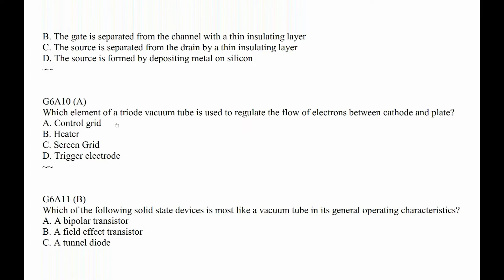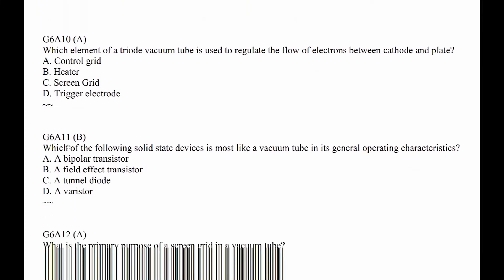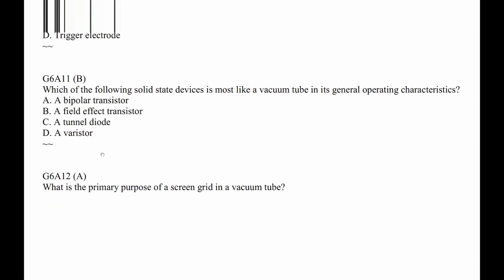G6A10. Which element of a triode vacuum tube is used to regulate the flow of electrons between the cathode and the plate? There's only one thing left, and that's the grid — the control grid. G6A11. Which of the following solid state devices is most like a vacuum tube in its operating characteristics? That's a field effect transistor, an FET. The FET is most like a vacuum tube.